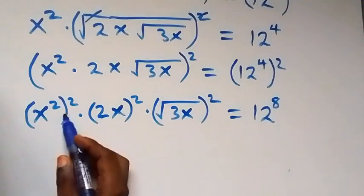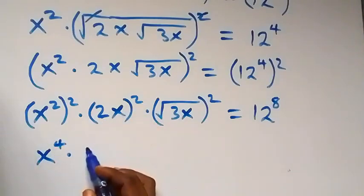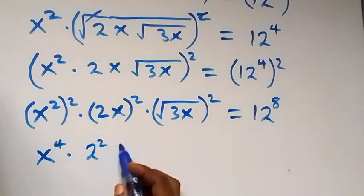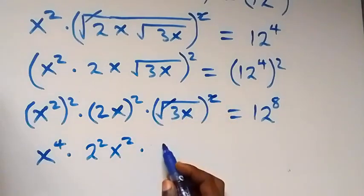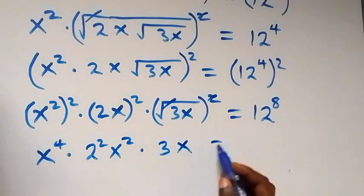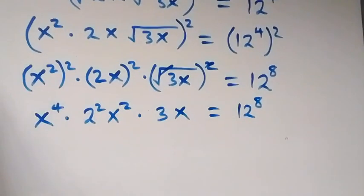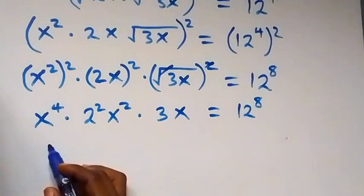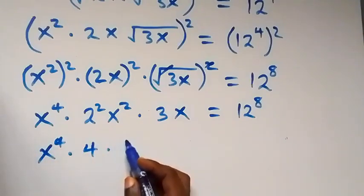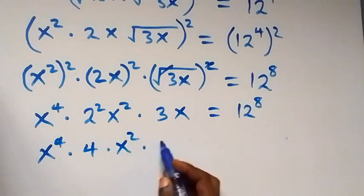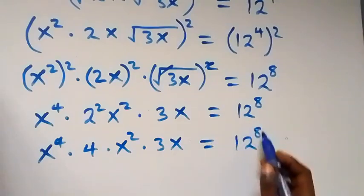And also here, 2 squared is 4, so we have x raised to power 4, then times square root of 3x, then times square root of 3x. From here the power multiplies — we have x raised to power 4, times 4, and times x. Then times square root of 4x, equals 12 raised to power 8.